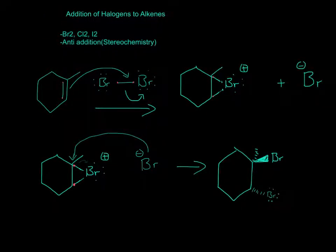For the addition of halogens to alkenes. So you have your alkene right here, and if you want to add halogens to it, for example, Br2, Cl2, or I2, you can, but the only thing is it'll be an anti-addition.